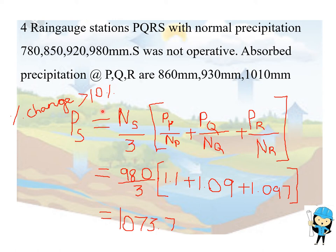The formula is Ns divided by 3 - that is, station S is not operative, so the normal precipitation at S divided by 3. Three refers to the 3 ratios: Pp/Np, that is 860 by 780 equals 1.1, plus Pq by Nq, that is 930 by 850 equals 1.09, plus 1010 by 920 equals 1.09.